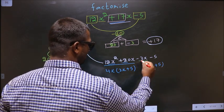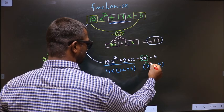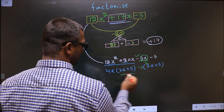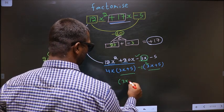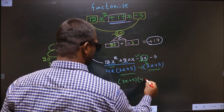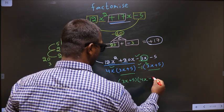Now from this 3x has gone inside, so outside you are left with minus 1. Now you take out 3x plus 5 common. So here you have 4x and here you have minus 1.